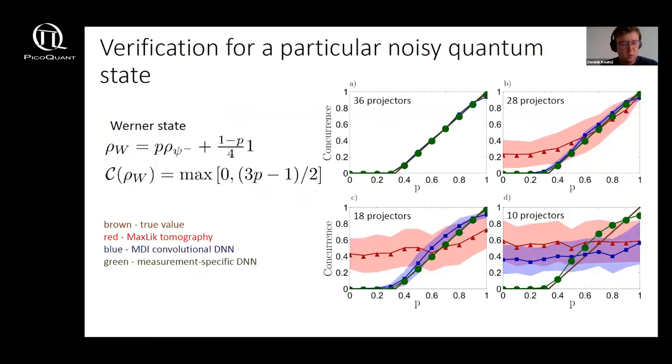Finally we tested our approaches on a never seen before quantum state, namely a Werner state for which the concurrence is a piecewise linear function of the parameter p that defines how much noisy the system is. In the figures we can see the estimated values of concurrence from different numbers of Pauli projectors.